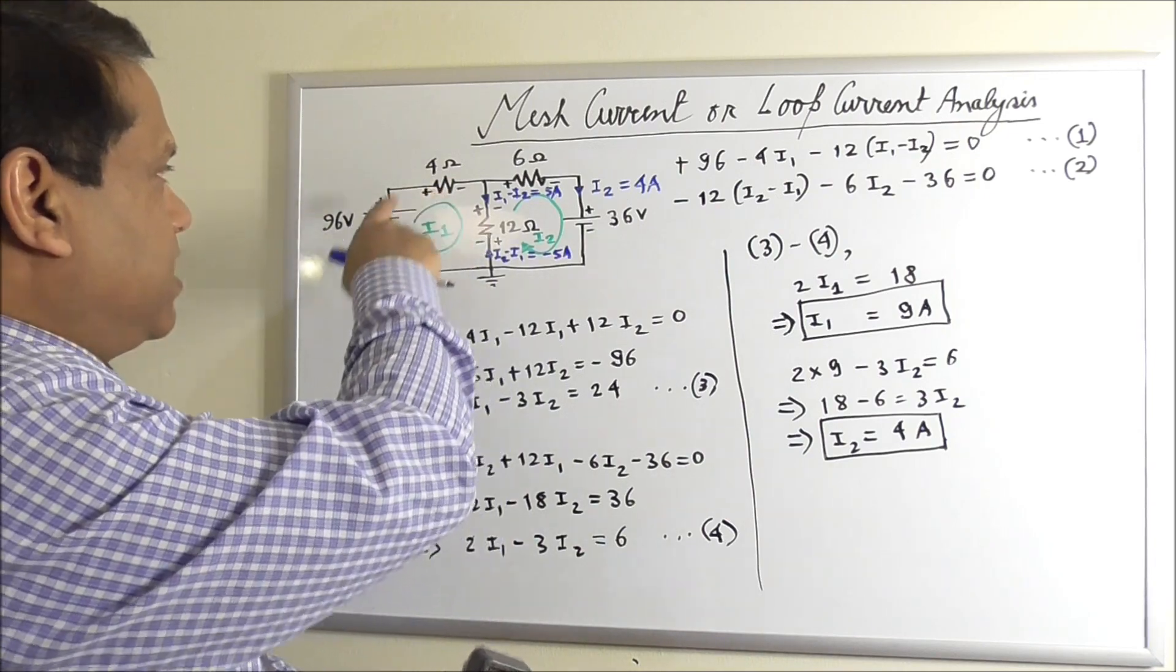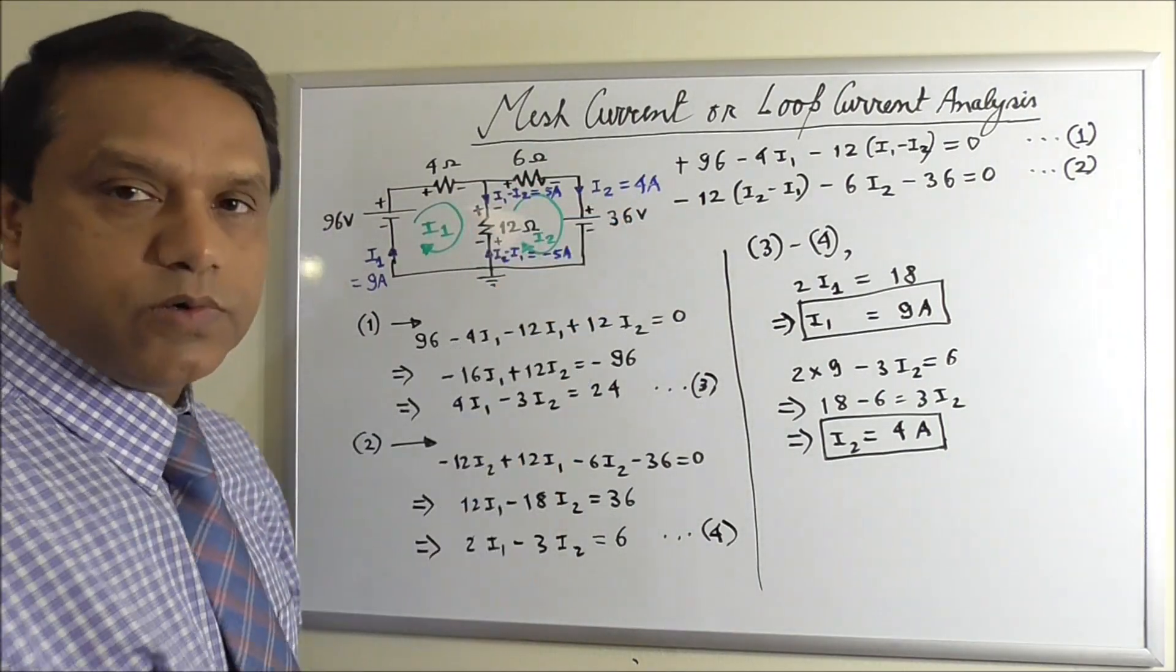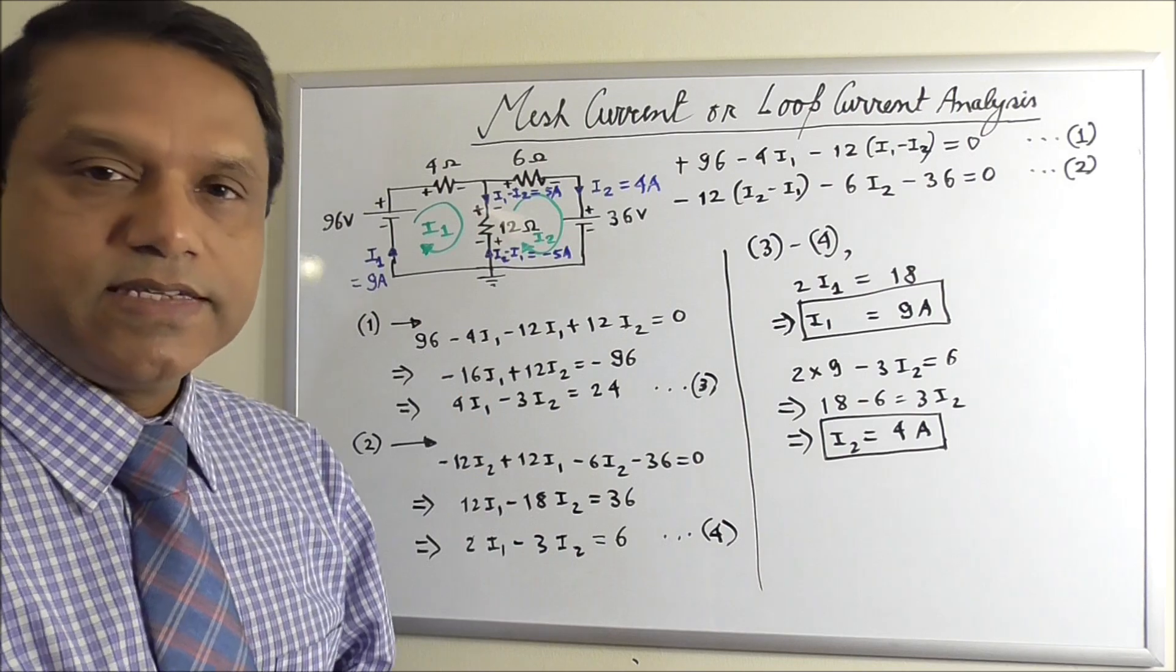Now that we know all the currents, we can find voltage drops across resistors. So this voltage drop will be 9 times 4, 36 volt. And this drop will be 6 times 4, 24 volt. And this drop will be 5 times 12, 60 volts.